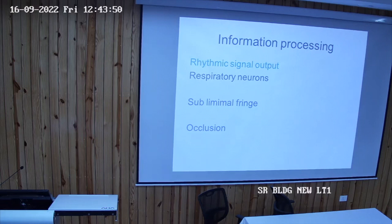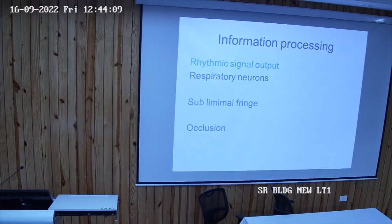Just opposite to subliminal fringe is the phenomenon of occlusion. Neuron A stimulates two neurons and neuron B also stimulates two neurons, but one neuron is common to both. When A and B fire simultaneously, the common neuron is stimulated by both — the total output is less than the sum of individual outputs. These phenomena are important in the reduction and increase of signal processing in the brain.